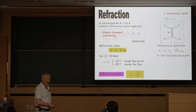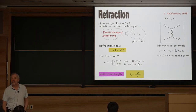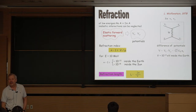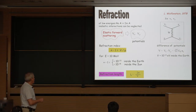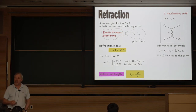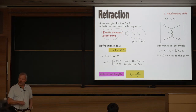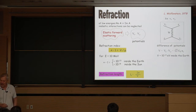The refraction length can be of different sign. For instance, the potential is of different sign for neutrinos and anti-neutrinos. A student asks: can neutrinos be faster than the speed of light?